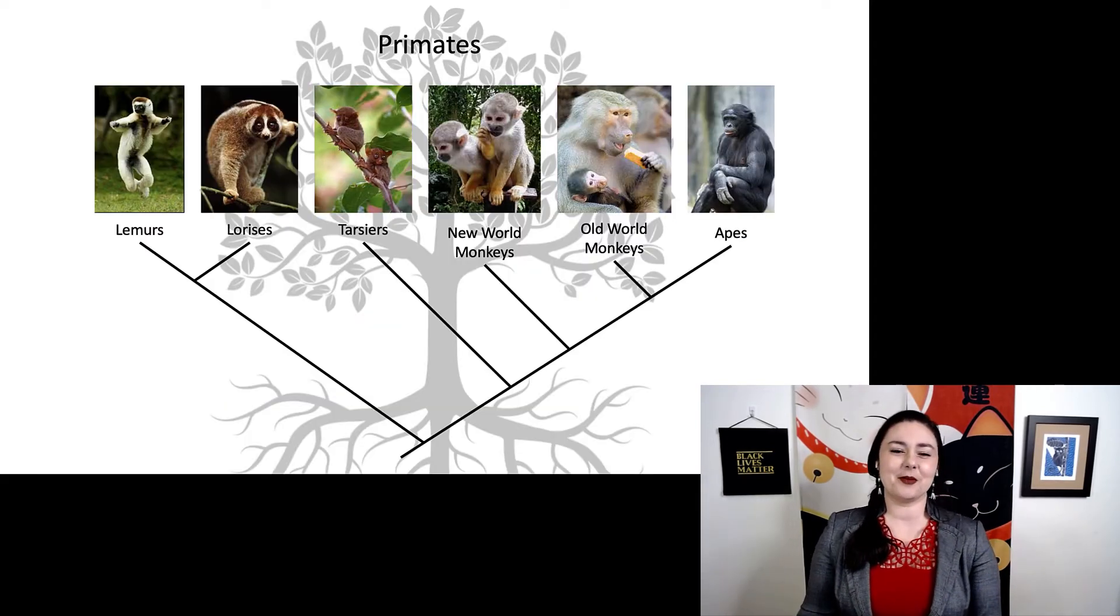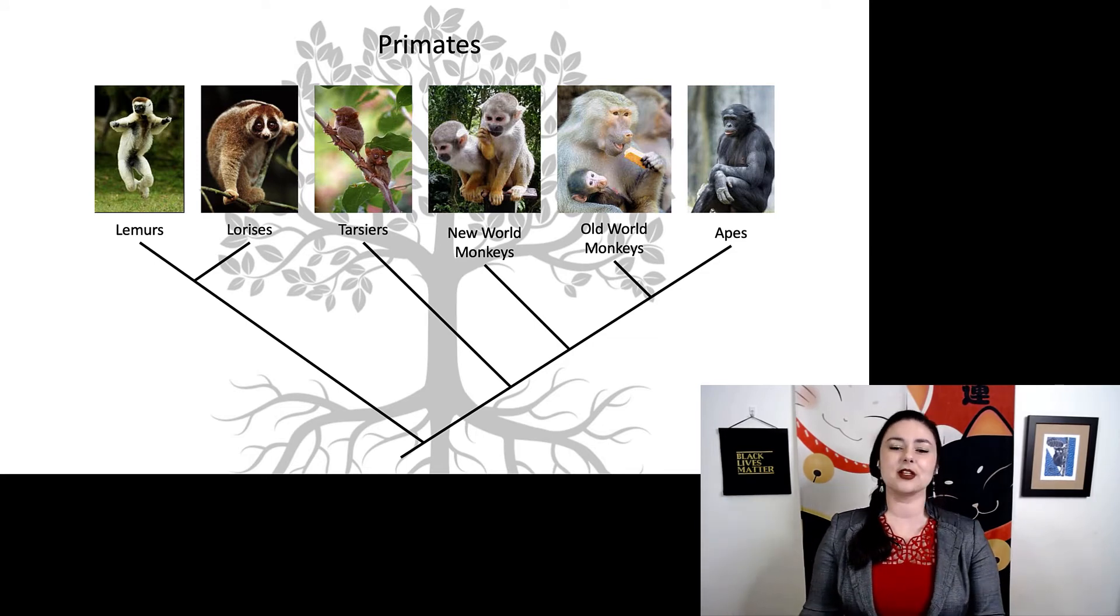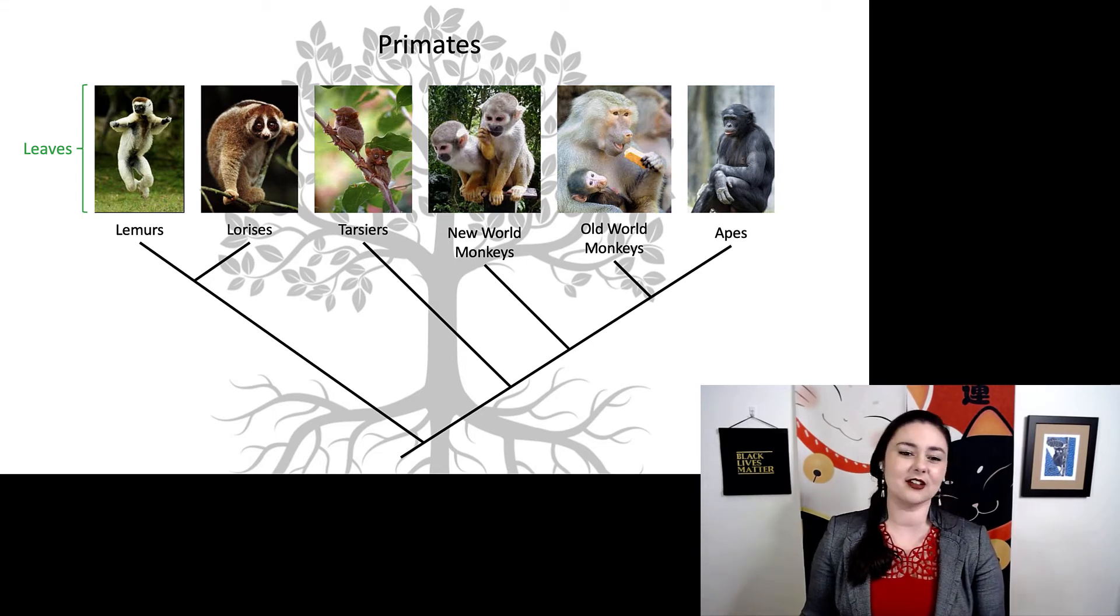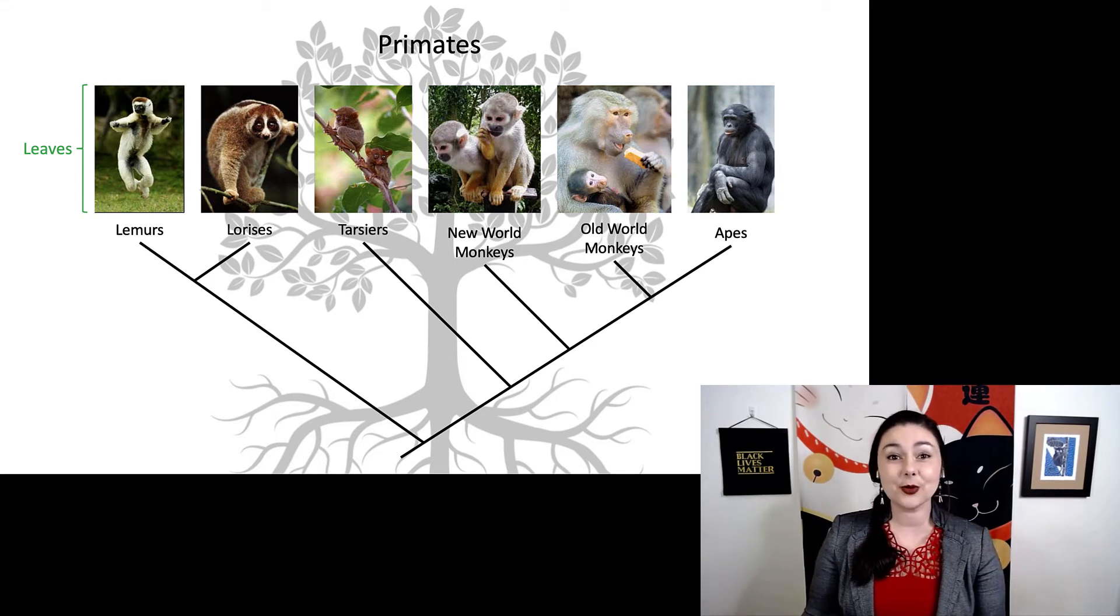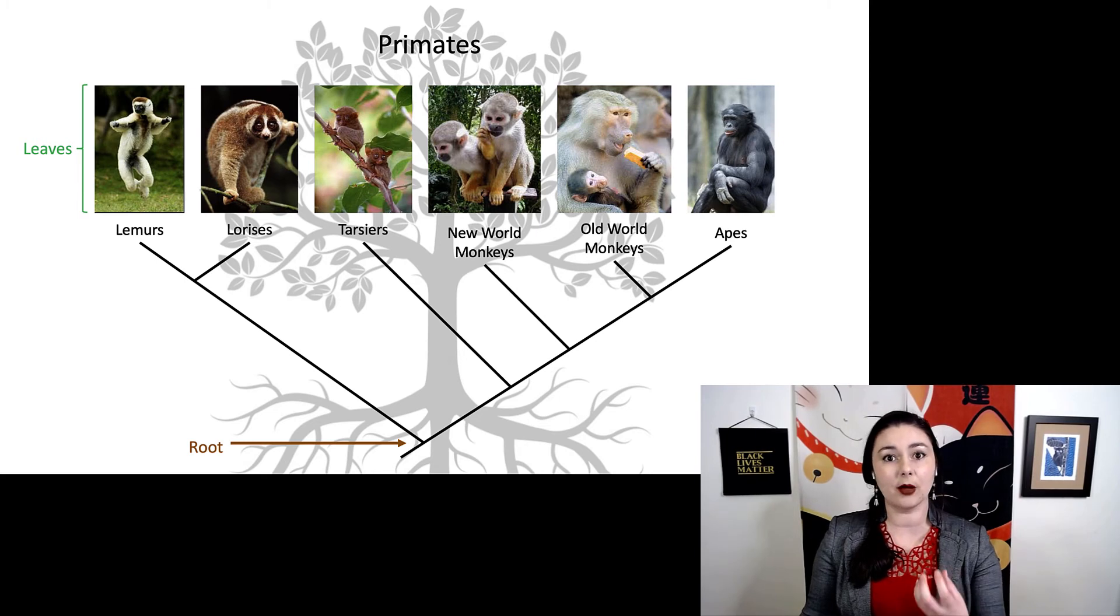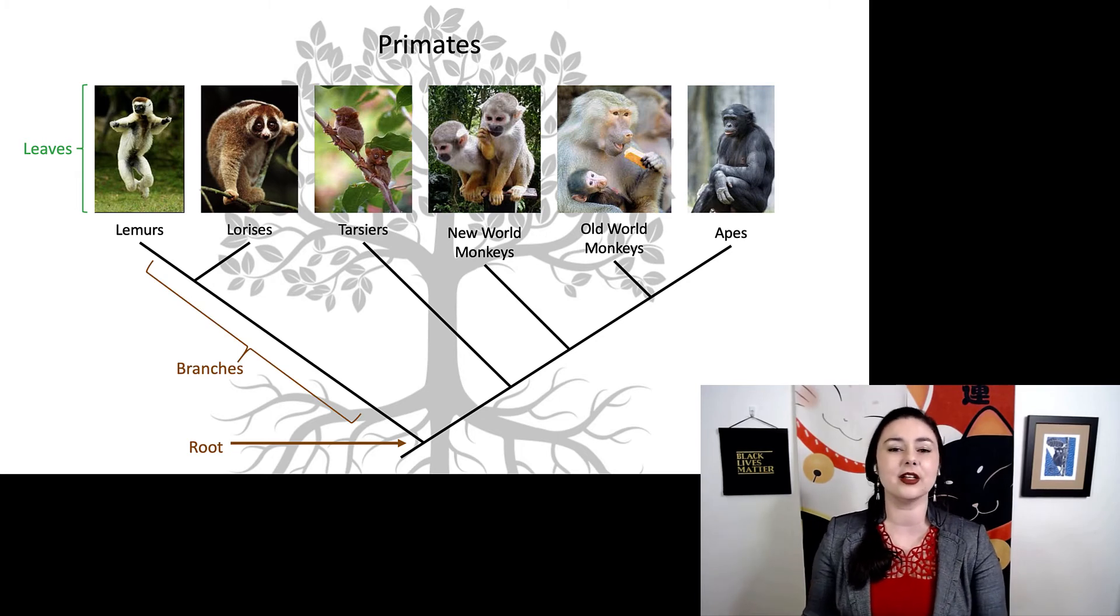Let's look at another example. Again, I made this one here, the different major primate groups, and I put a tree in the background because I'm cheesy like that. Our leaves are the species that are alive today. So that's our lemurs, lorises, tarsiers, new world monkeys, old world monkeys, and apes. Our root is at the other end, so there's this hypothetical species that we think originated all primates, because right here we're looking at all primates, and everything in the middle is our branches.